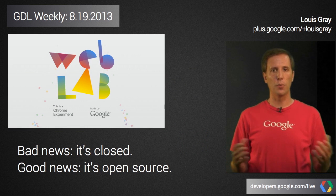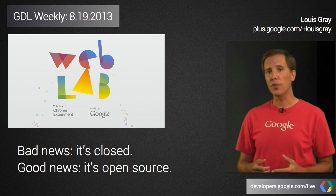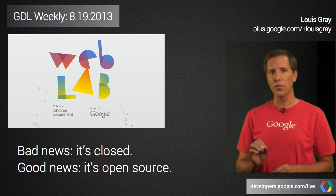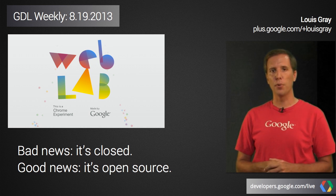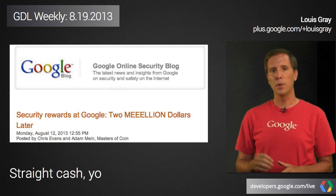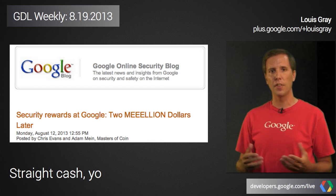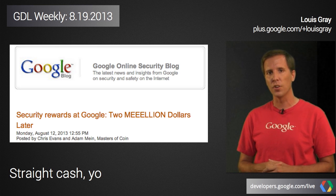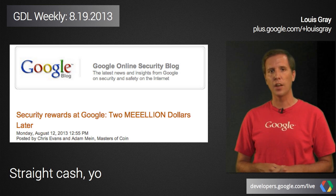Meanwhile, outside of our studios, on our Google Developers blog and Google Plus page, we had a few more announcements last week. First, the Chrome Web Lab finished its run in London, but the good news is the program is being open sourced and will live on forever. Meanwhile, Google's security team continues to be in a giving mood, announcing that they've given out $2 million to the developer community in security rewards. Because each installation of Chrome is free, that comes out to about infinity dollars per copy.